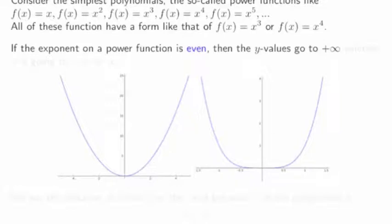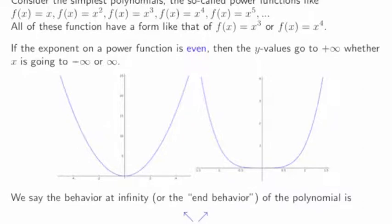Let's consider the simplest polynomials, the so-called power functions, like f(x) equals x, or x squared, x cubed, x to the fourth, x to the fifth, and so on — all functions of the form x to the n. If the exponent on a power function is even, then the y values will go off to infinity whether x is going to negative infinity or off to the right. As we move away from the y-axis, the function will begin to rise. We say the end behavior of such polynomials looks like this picture: shooting up to the left and shooting up to the right. This mimics the behavior of x squared or x to the fourth.